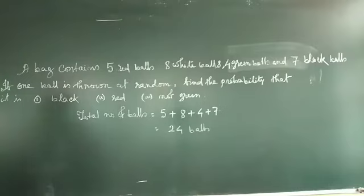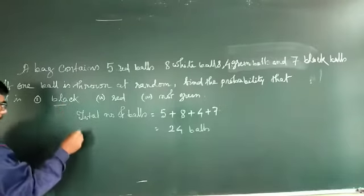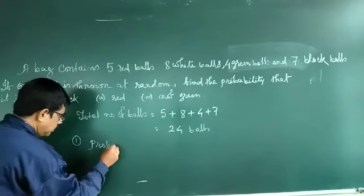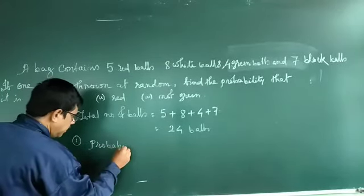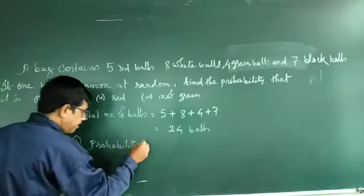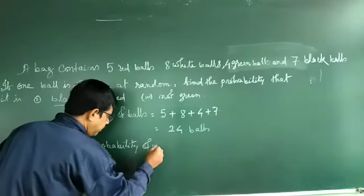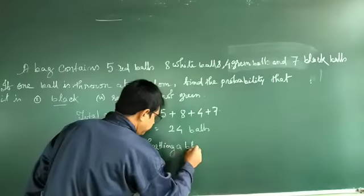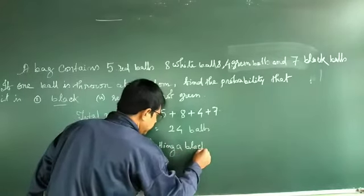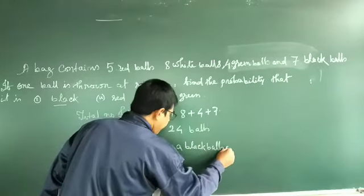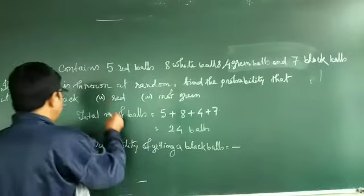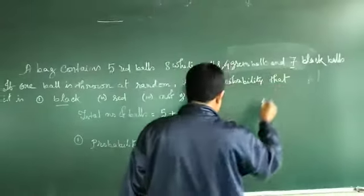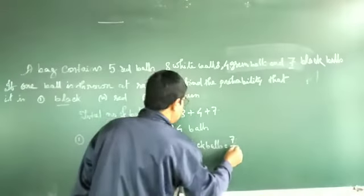Then after that, what is the probability of getting a black ball? Number one: probability of getting a black ball. How many black balls are there? Seven black balls. So it will be 7/24.